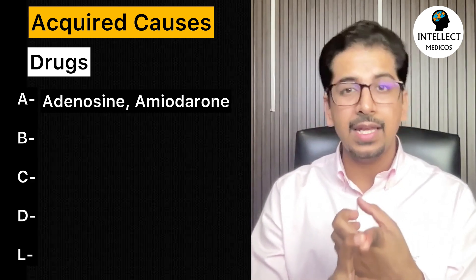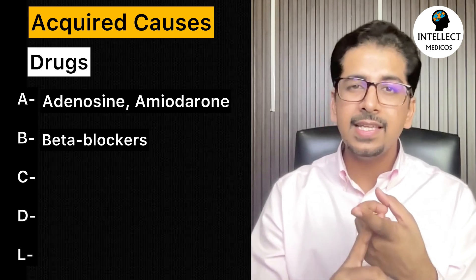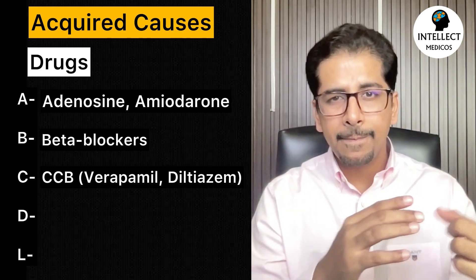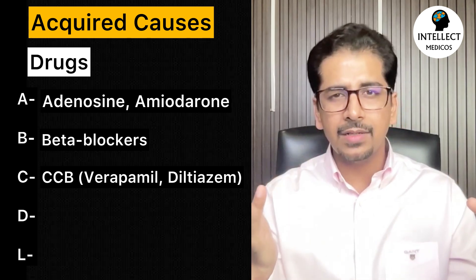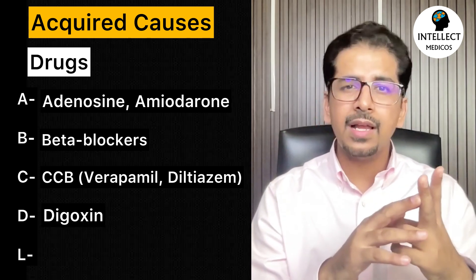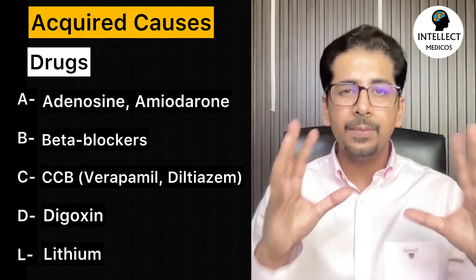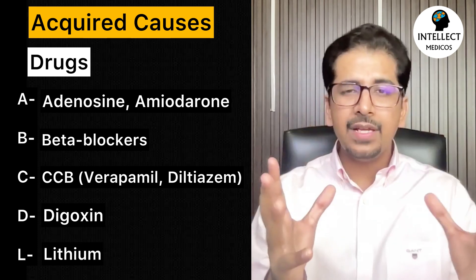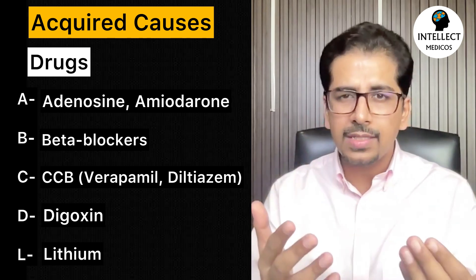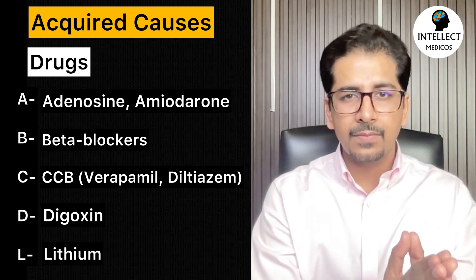ABCDL: A stands for adenosine and amiodarone; B for beta blockers; C for calcium channel blockers — non-dihydropyridine, which are verapamil and diltiazem; D for digoxin; and L for lithium. These are important drugs because patients may already be on them, and you will need to stop and withdraw the offending drug.